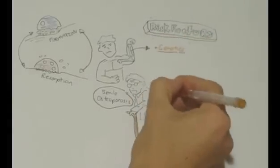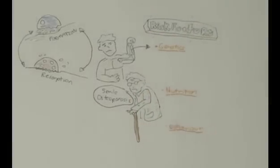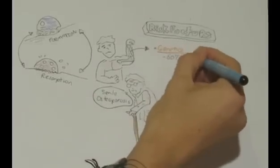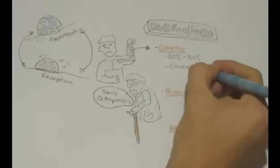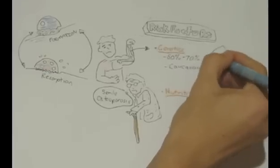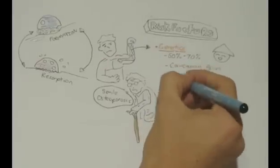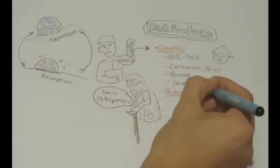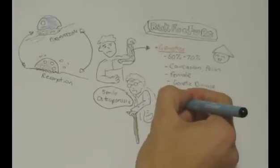According to one journal, family history and genetics account for about 60-70% of variation in bone mineral density. Having Caucasian or Asian ethnicity, being female, especially post-menopausal, and certain diseases that accelerate bone loss, such as rheumatoid arthritis, increase the risk of developing osteoporosis.